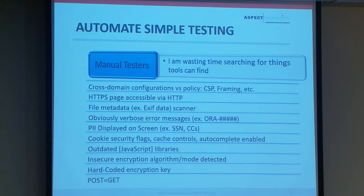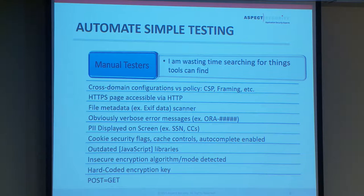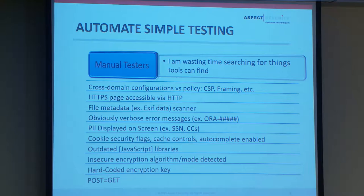For manual pen testers — that's how I started my career — I don't want to spend time trying to find things that a tool can find. It's very wasteful and mind-numbing to look at HTTP headers to figure out if there's a secure flag or an HTTP-only flag because a tool can easily detect that. If you're a pen tester and you're looking for things that could be detected automatically, you should be writing a tool to do it and providing that tool to everyone else on your team for consistency and efficiency.